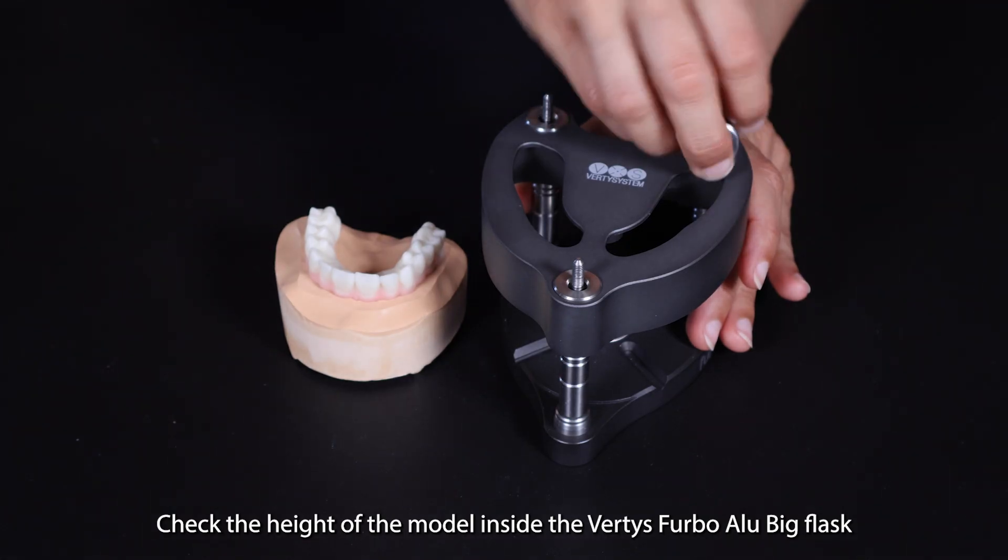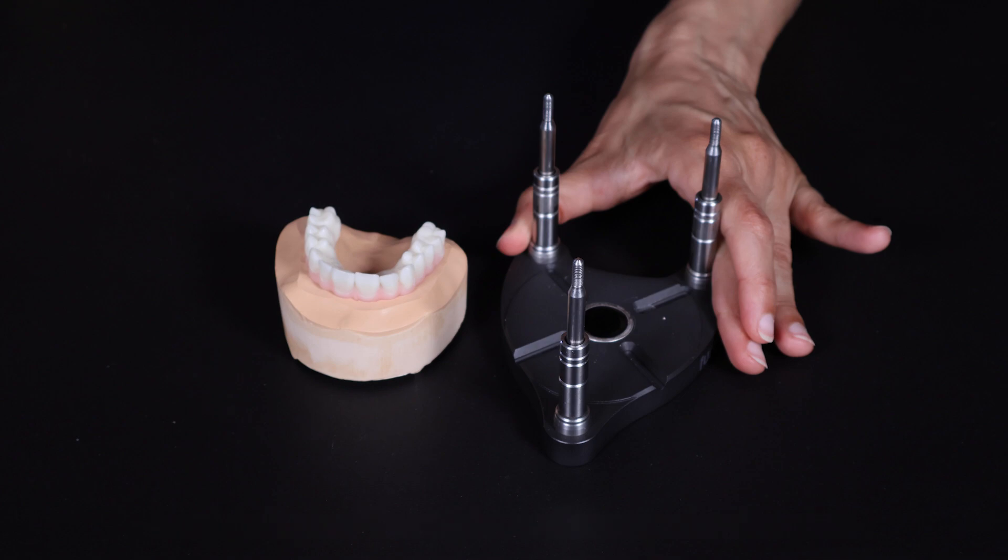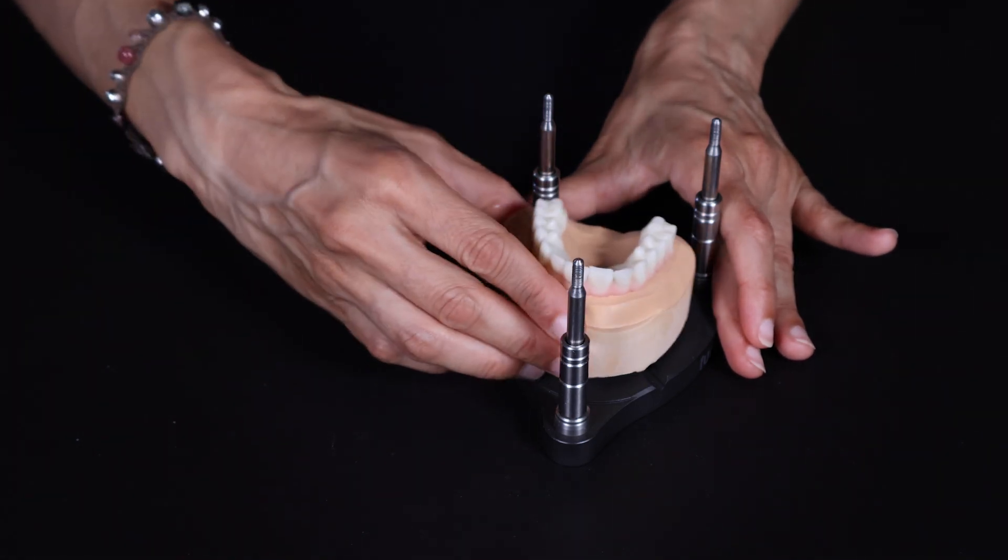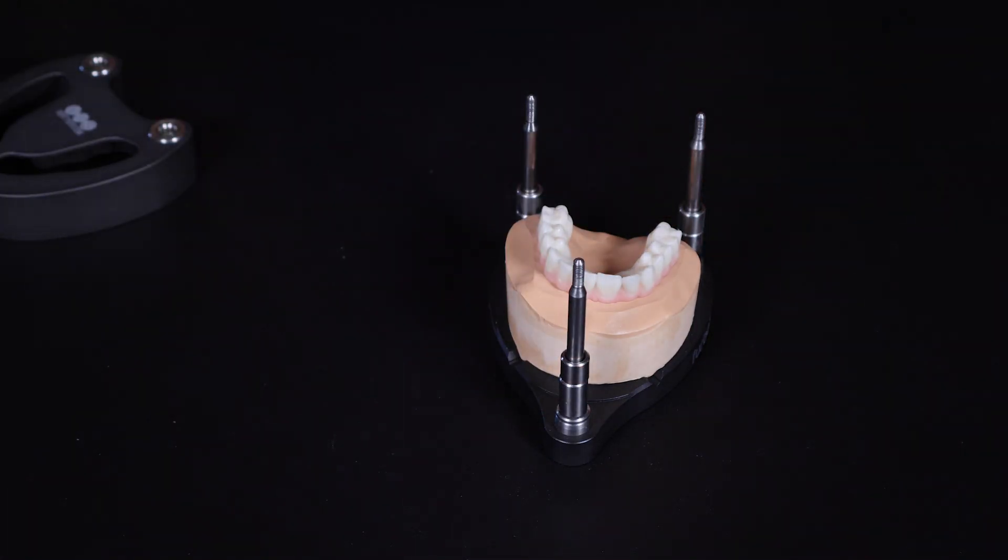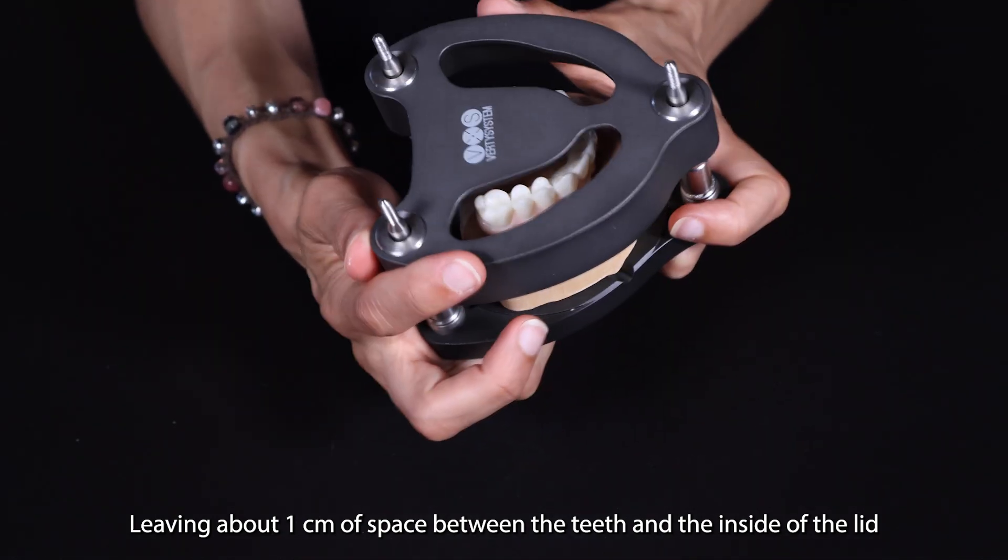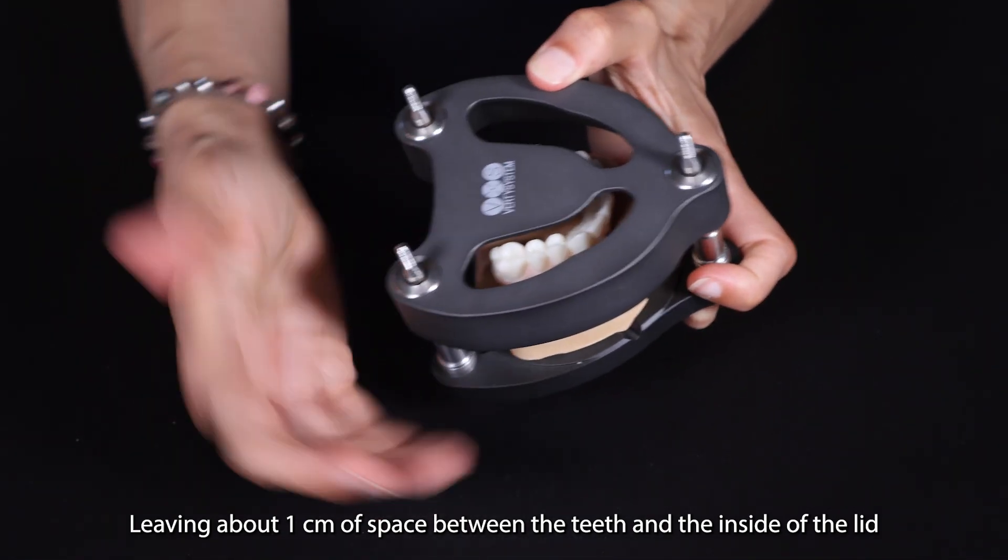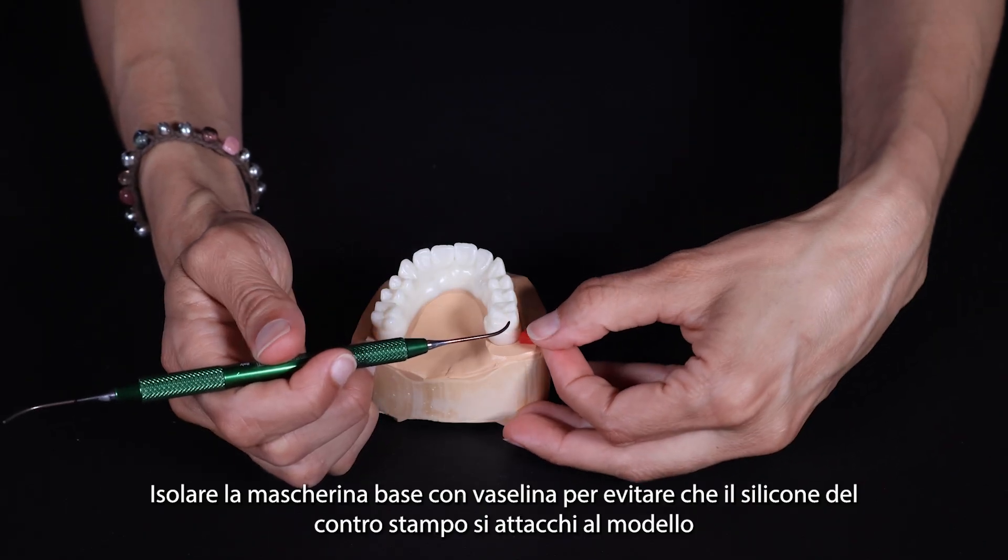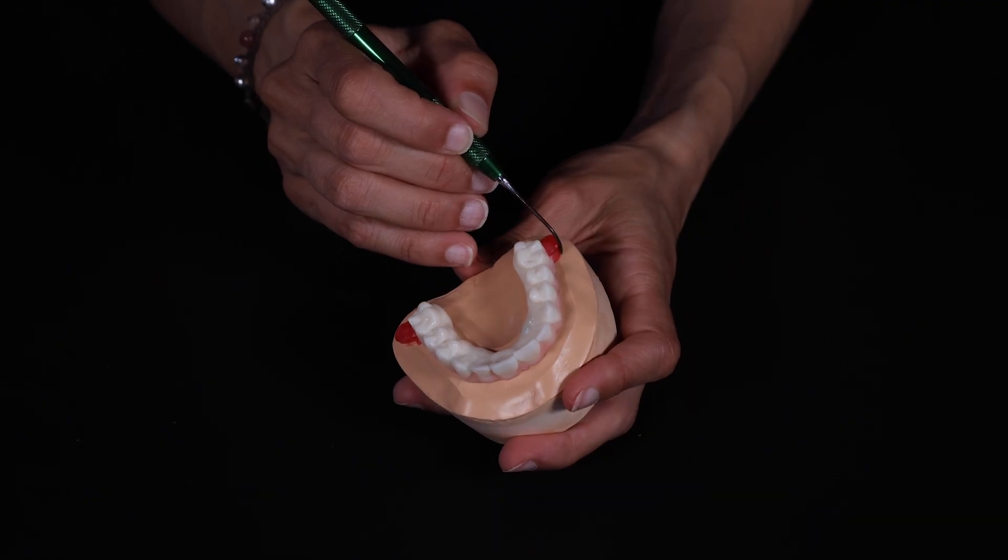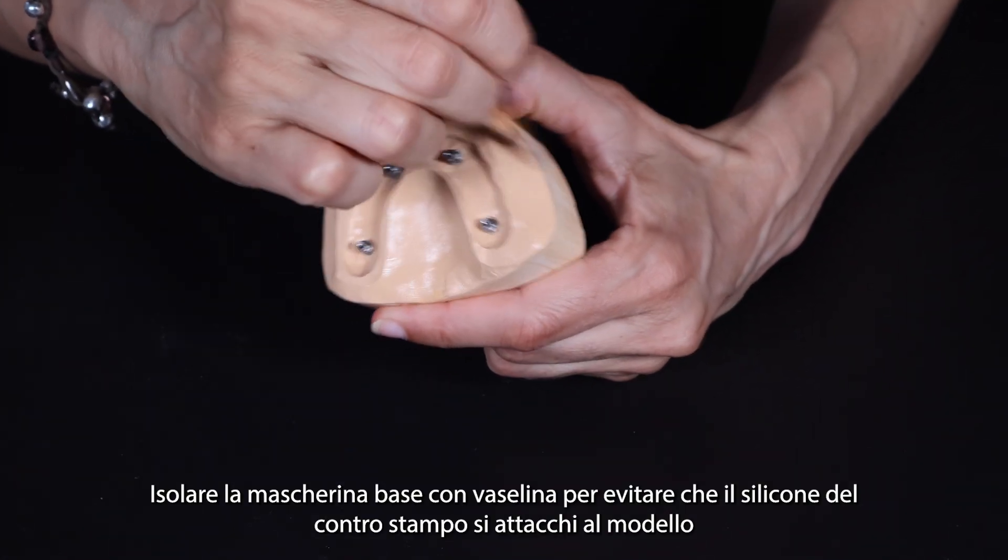Check the height of the model inside the Vertis Furbo Lube Big Flask, leaving about one centimeter of space between the teeth and the inside of the lid. Apply two wax peninsulas at the level of the last molars on the buccal side. Isolate the base mask with petroleum jelly.